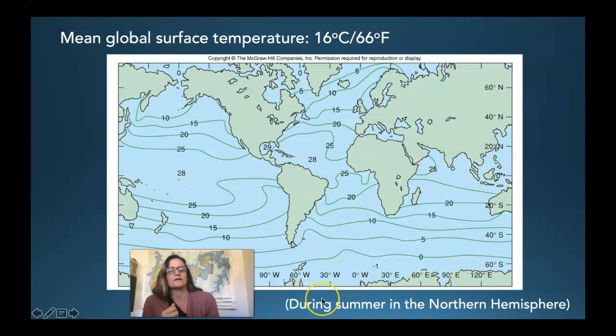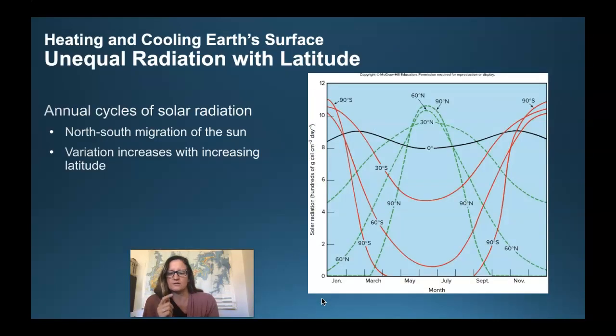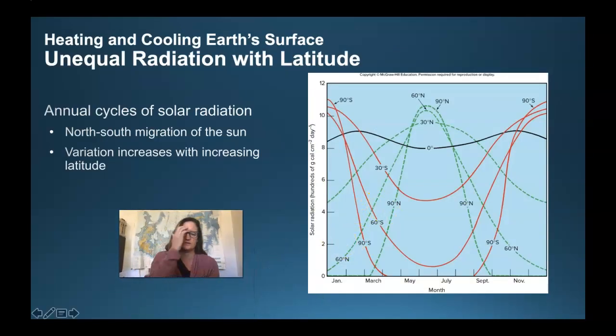Right around the equator we're looking at the warmest, 28 is at the highest, and then down to negative one here by Antarctica. So cold, 28 to negative one. This is during the northern hemisphere summer time.